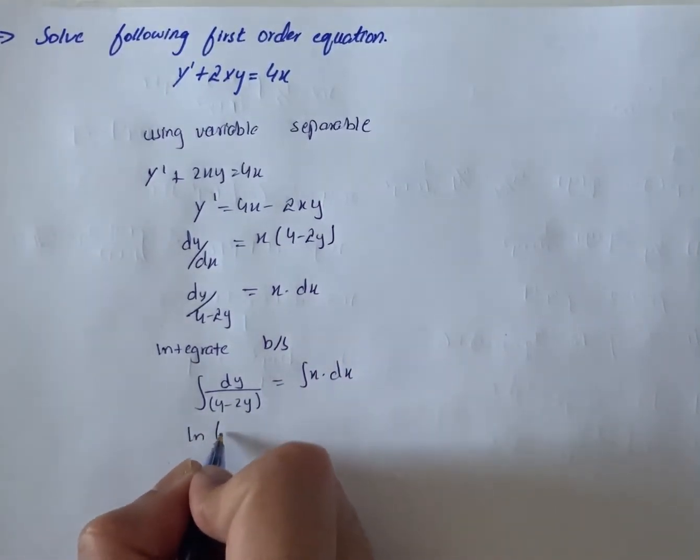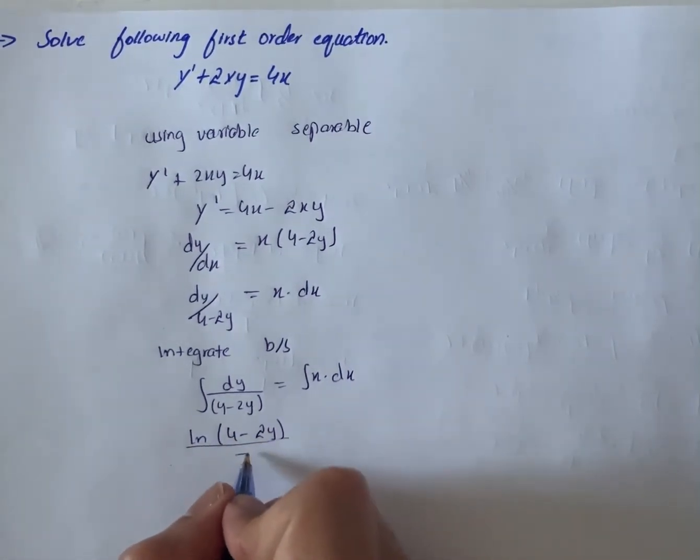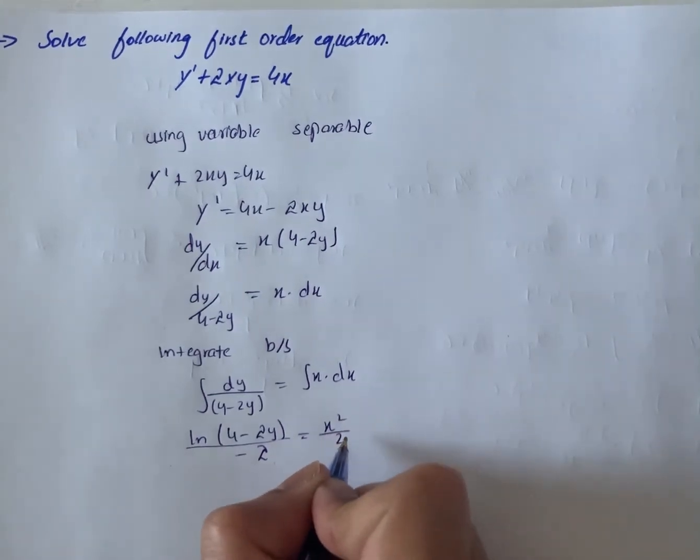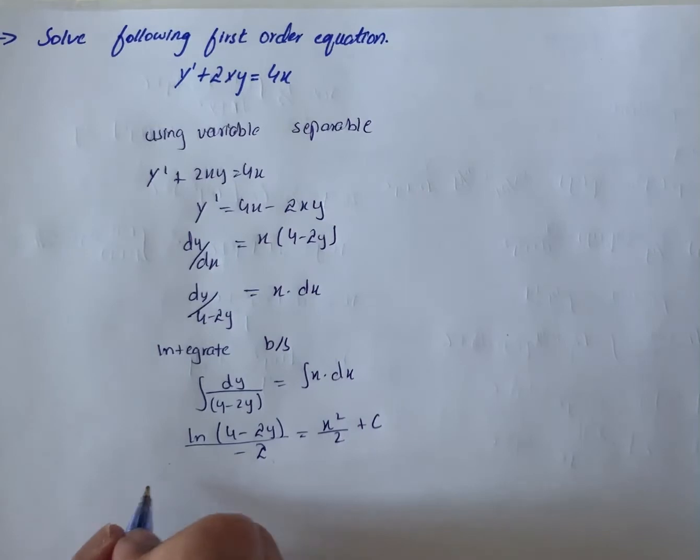This gives ln(4 - 2y)/(-2) = x²/2 + c, then log(4 - 2y) = -x² + 2c.